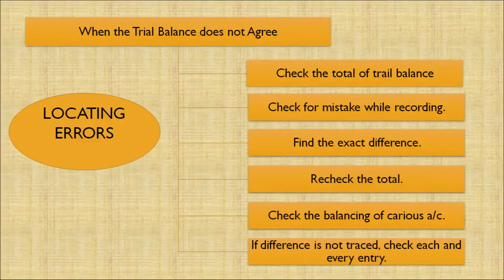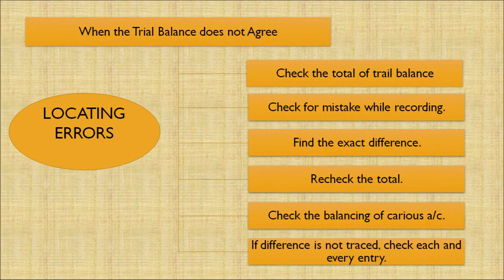There are six ways to locate errors when the trial balance does not agree: 1. Check the total of the trial balance. 2. Check the mistake while recording. 3. Find the exact difference. 4. Recheck the total. 5. Check the balancing of the various accounts. 6. If the difference is not traced, check each and every entry.